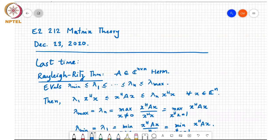And so lambda 1 is the smallest eigenvalue and lambda n is the biggest eigenvalue. Then lambda 1 times x-Hermitian x is a lower bound on x-Hermitian Ax and lambda n times x-Hermitian x is an upper bound on x-Hermitian Ax for any x in C to the n.